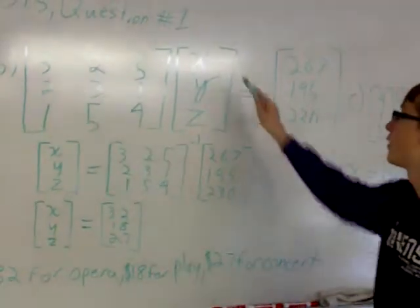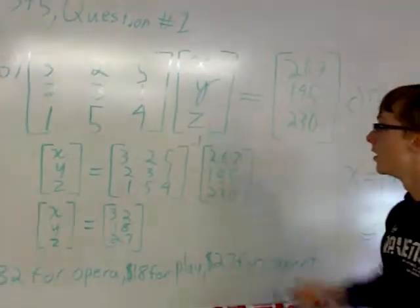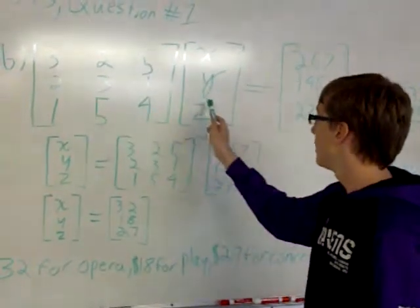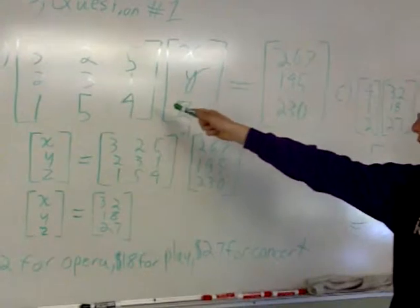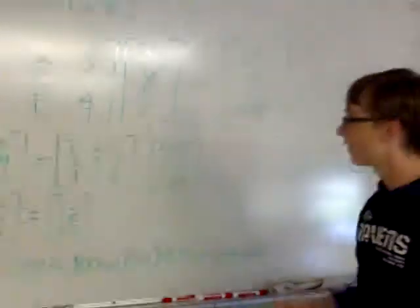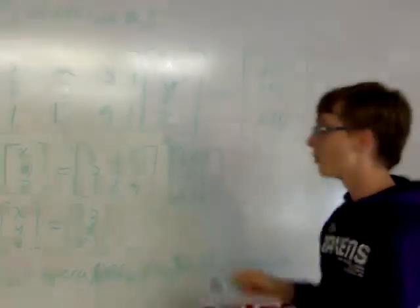Now for this question, you want to find X, Y, and Z. To do that, you keep X, Y, and Z over here and flip this matrix over here. And then you inverse this matrix.